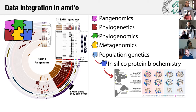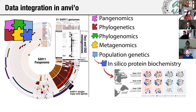We then used single-copy core genes the pangenome revealed and the metagenomic read recruitment results to study the genomic heterogeneity of a globally abundant SAR11 population. This enabled us to combine all these data with predicted protein structures of SAR11 core genes to employ in silico protein biochemistry, investigating how the proteome of SAR11 responds to changing waters carried around the globe through the conveyor belt of the oceans.